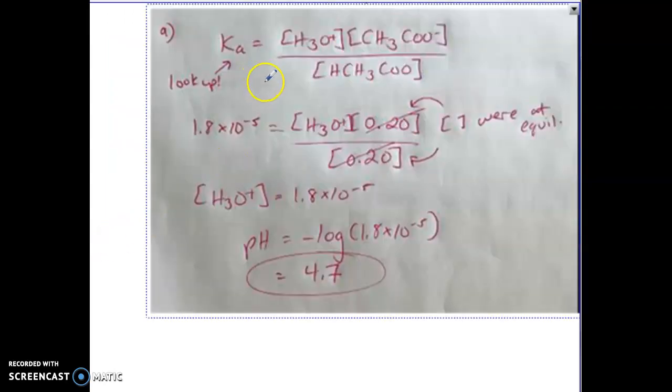So here's essentially what you would do: you have your Ka expression, so it's products over reactants - remember we're not including water. Ka value we can look up in the back of our textbook, and we have these two at equilibrium so we can just plug this into Ka. So essentially our hydronium we're solving for - it's the same because these get cancelled, but you should end up with 1.8 times 10 to the negative 5, and to find pH you take the negative log of this.